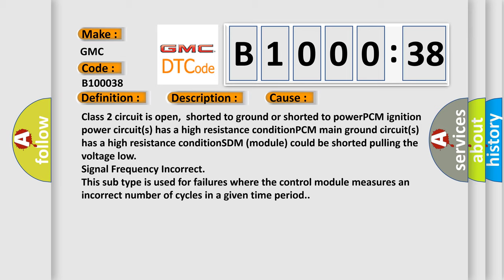Signal frequency incorrect. This subtype is used for failures where the control module measures an incorrect number of cycles in a given time period.